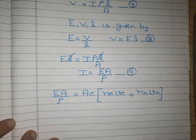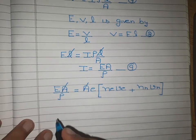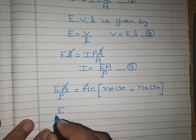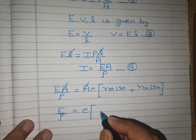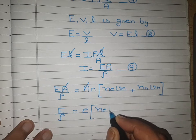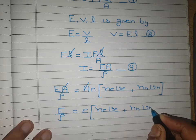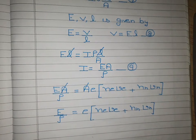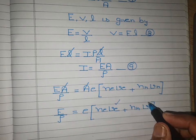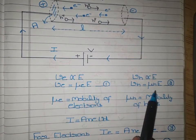Cancelling A from both sides: E/ρ = e·(N_E·V_E + N_H·V_H). Substituting V_E = μ_E·E and V_H = μ_H·E from equations 1 and 2, and cancelling the electric field E: 1/ρ = e·(N_E·μ_E + N_H·μ_H).